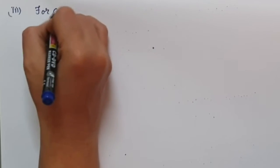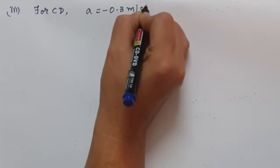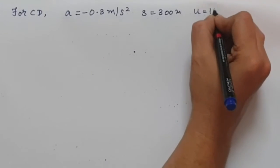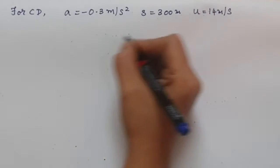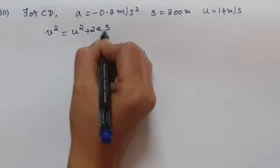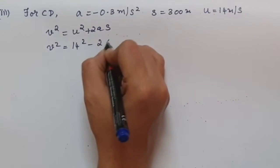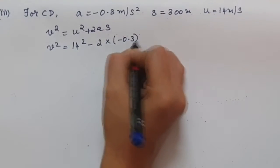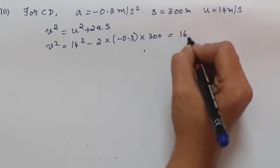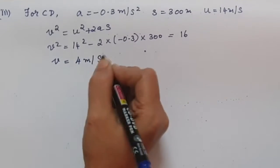For section C to D, it is given that a = −0.3 m/s², S = 300 meters, and U = 14 m/s. Using V² = U² + 2aS, V² = 14² + 2 × (−0.3) × 300 = 196 − 180 = 16. Therefore V = 4 m/s.